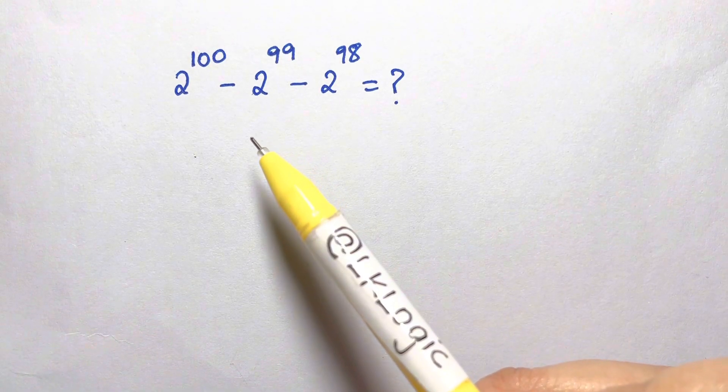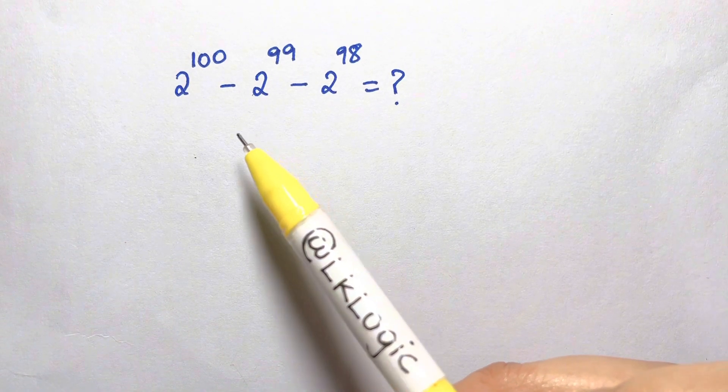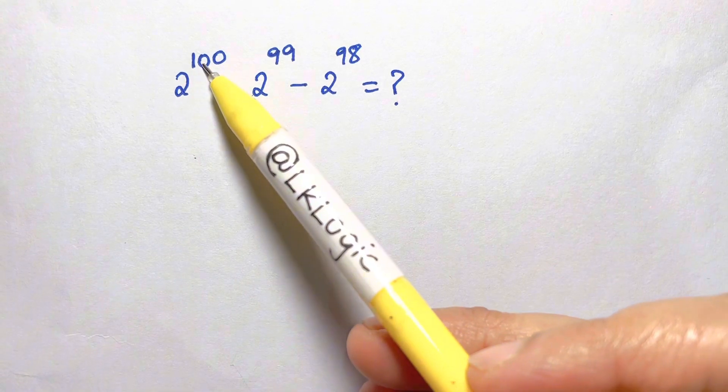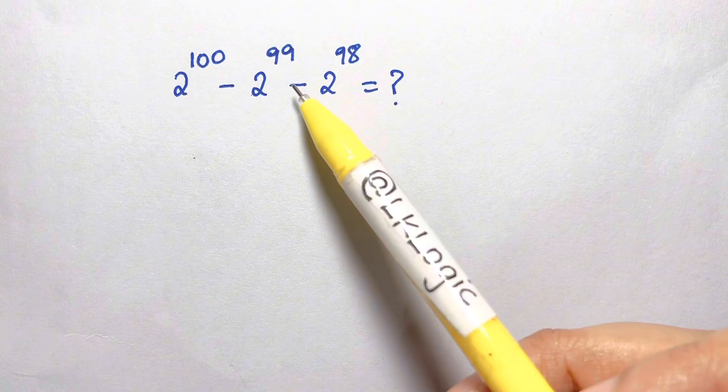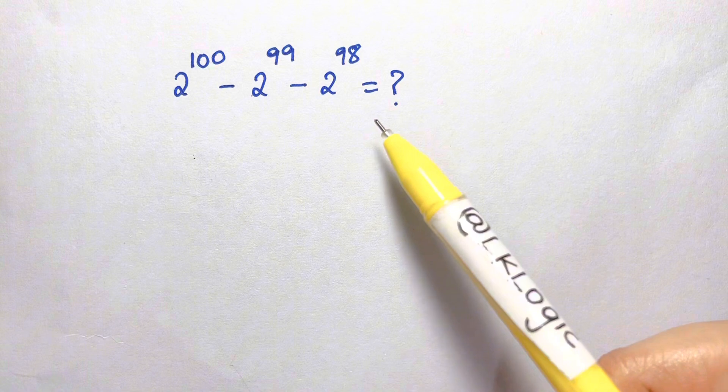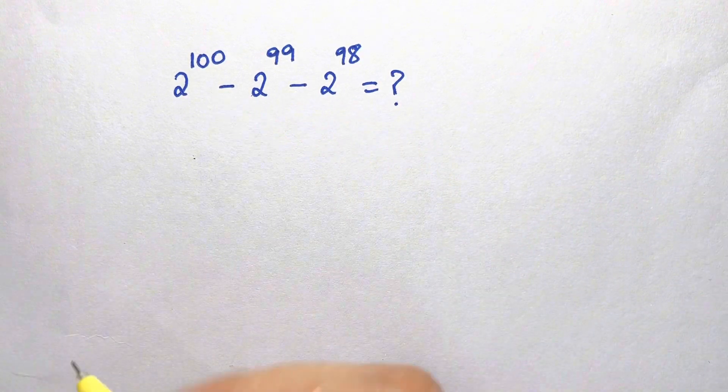Hi everyone, I am here with a super easy Math Olympiad question for you all. That is 2 raised to 100 minus 2 raised to 99 minus 2 raised to 98 equals what. So what we can do here is...